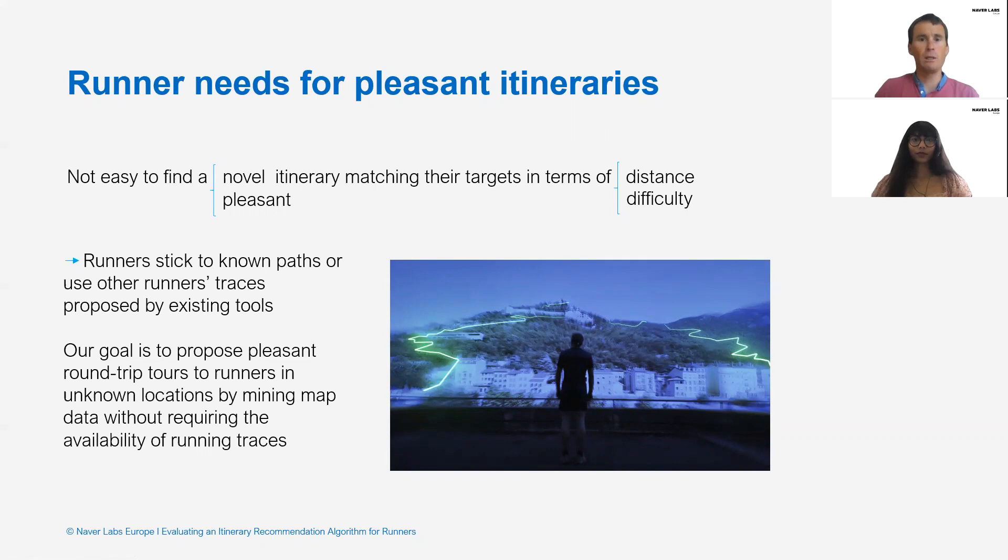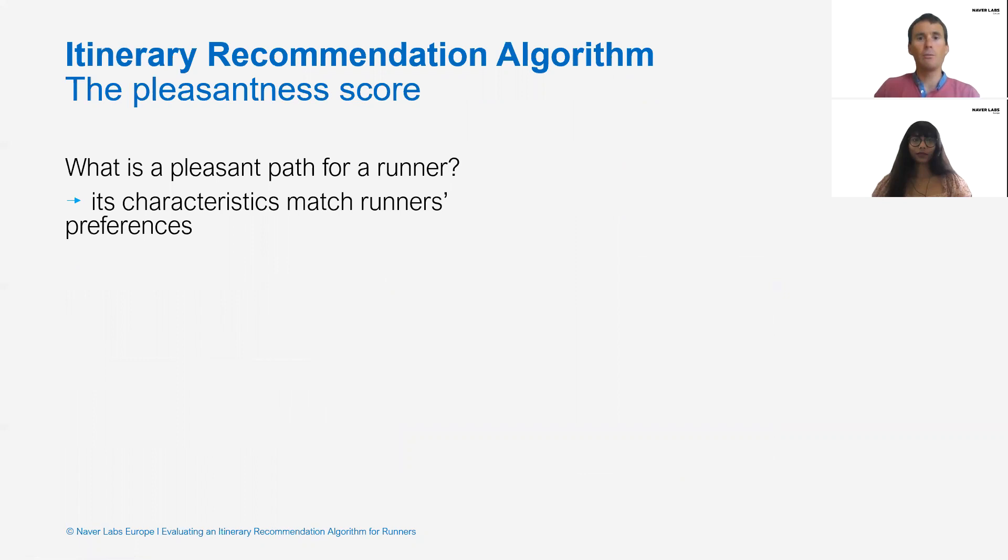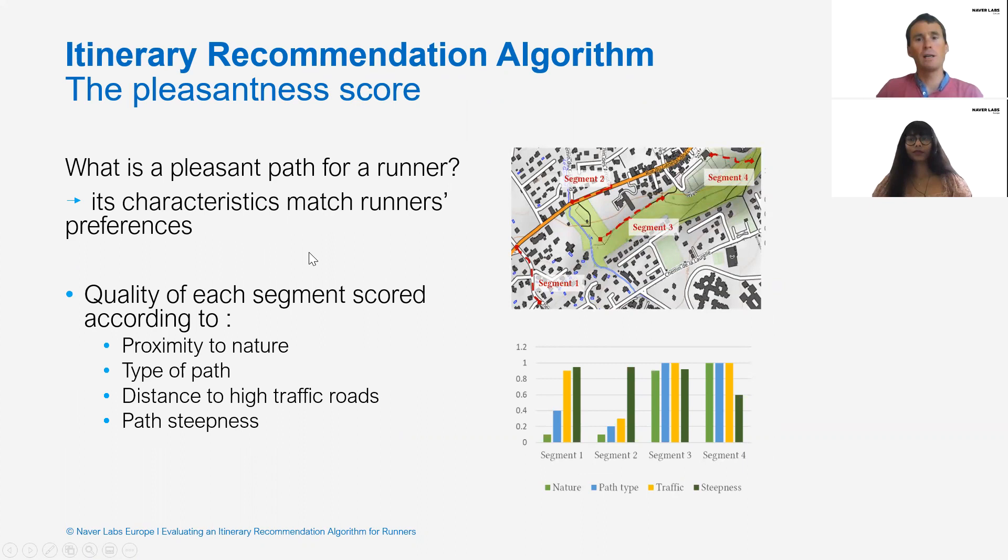To do so, the first task of our algorithm is to compute a pleasantness score. A pleasant running route is one composed of paths that match the runner's preferences. Based on initial interviews, we specified runners' standard preferences to be proximity to nature, type of path, distance to high traffic roads, and path steepness.